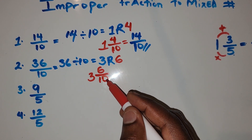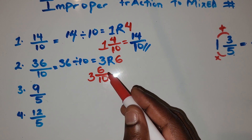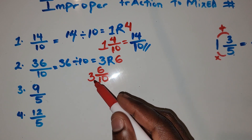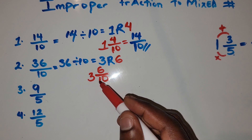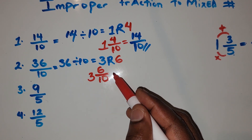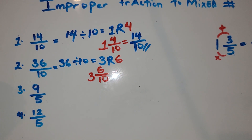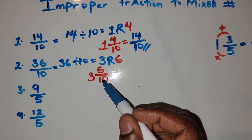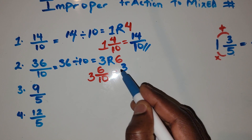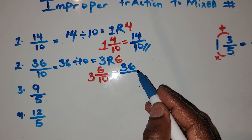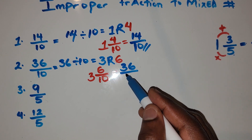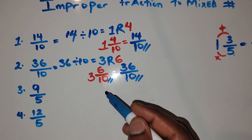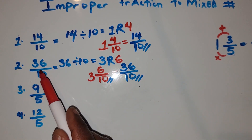So the mixed number is 3 and 6 over 10. To convert this back to an improper fraction, you multiply 3 by 10, which gives you 30, plus 6, which is 36. So 3 times 10 is 30, plus 6 is 36, and then you bring the 10 down as the denominator.